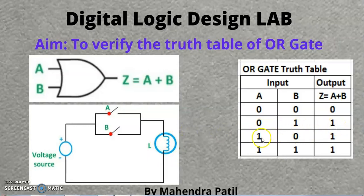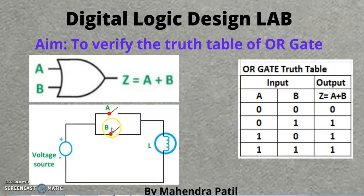The next input is 1 0, where A input is 1 whereas B is 0. When switch A is 1, it is closed, and switch B is open. That's why the current will flow from switch A to the lamp and the lamp will glow. The output for the 1 0 combination is 1.